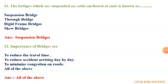The twelfth question: importance of bridges. The first option is to reduce the travel time, second is to reduce accidents arising day by day, third is to minimize the congestion on roads, and fourth is all of the above. It is easy to guess — the correct answer is all of the above.